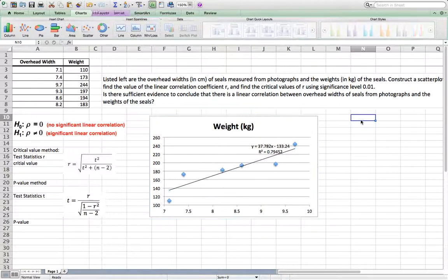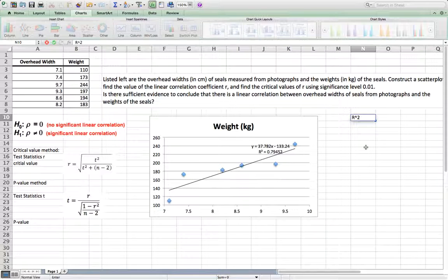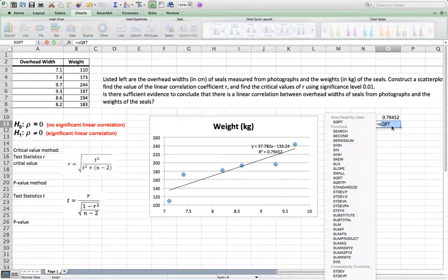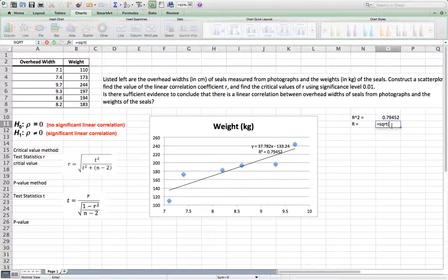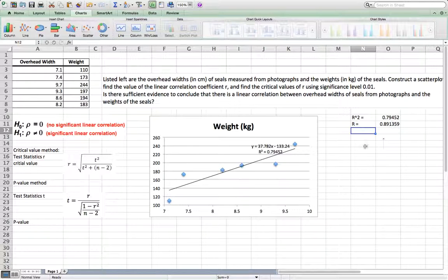From here, now I can say R squared equals, I listed it, which is 0.79452. Then the r will equal the square root of R squared, which is the square root of O10. So that will give you 0.89135.